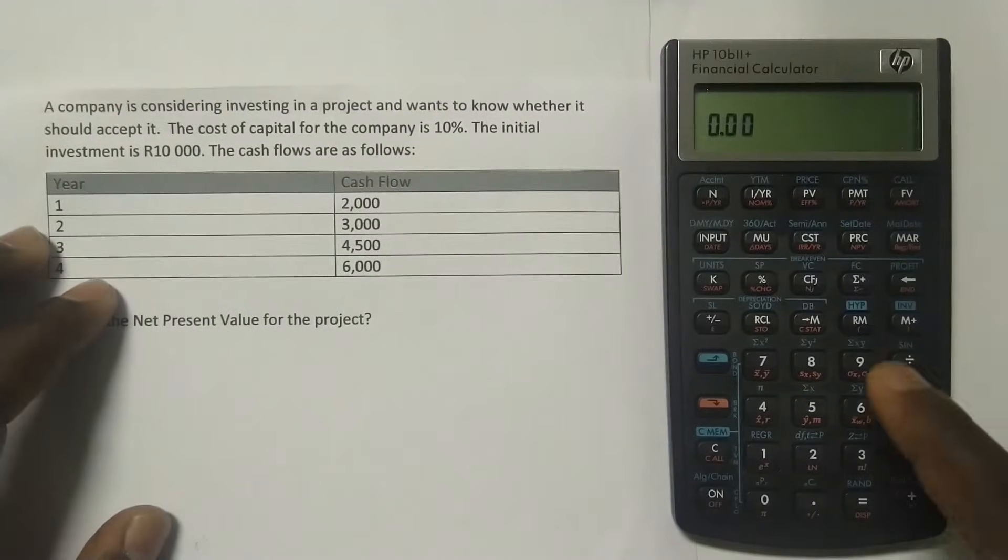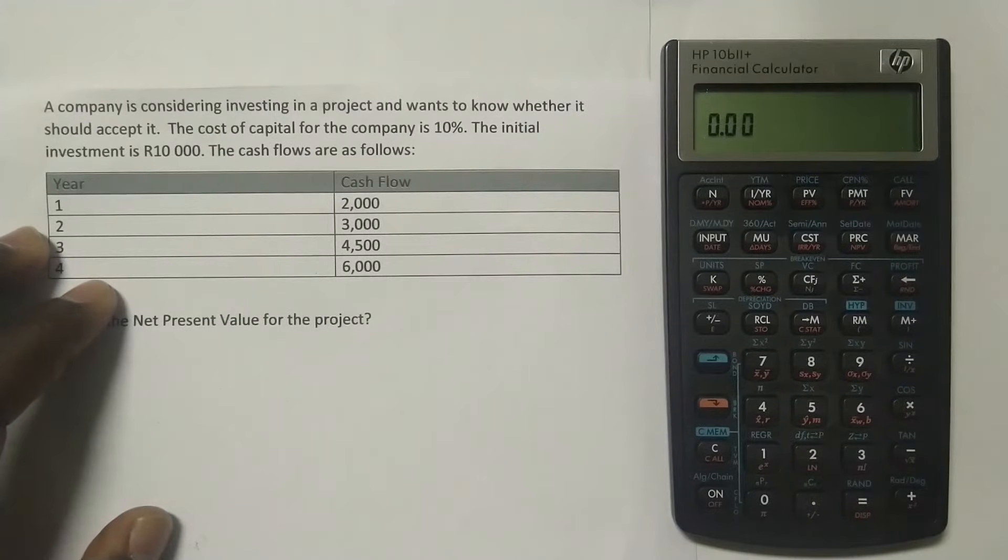Here's how you do this with the financial calculator. First things first, let's clear our memory. So you press the orange button, and then press C, and then it has cleared your memory.